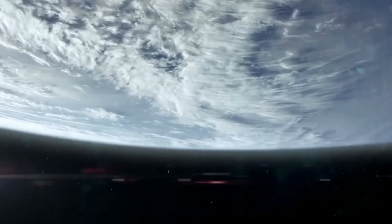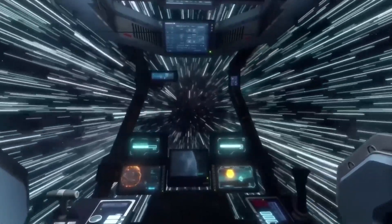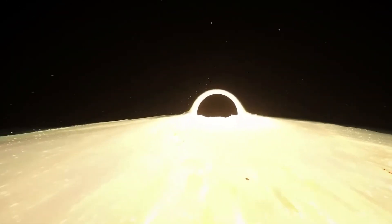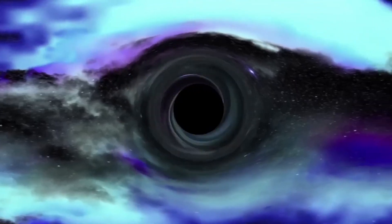But the researchers did not stop there. Using a technique called gravitational lensing, they were able to observe the accretion disk from multiple angles, effectively creating a 3D model of its structure. This allowed them to see the disk's innermost region, where the gas was closest to the black hole.